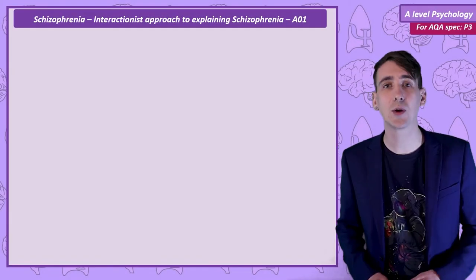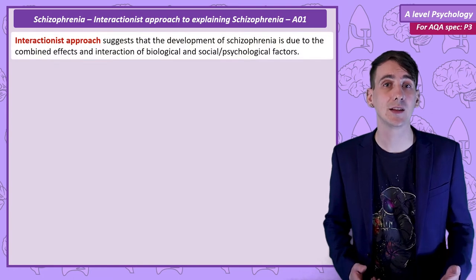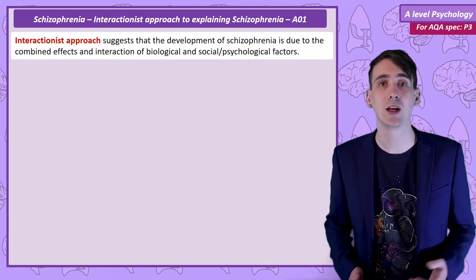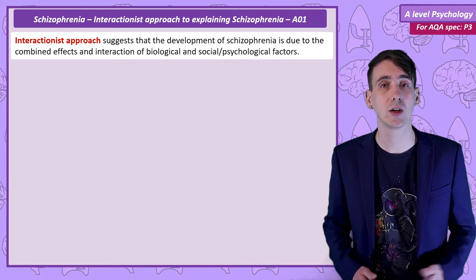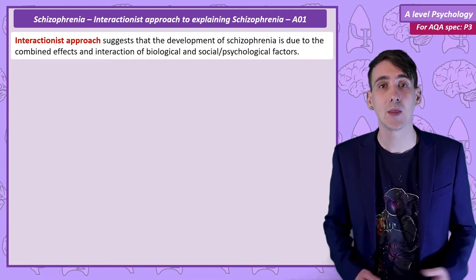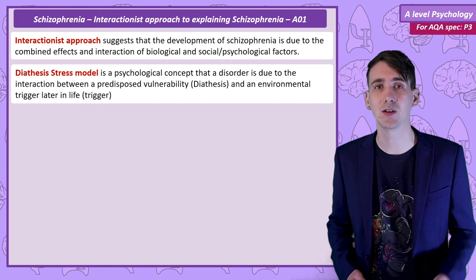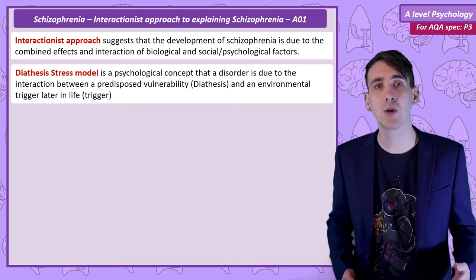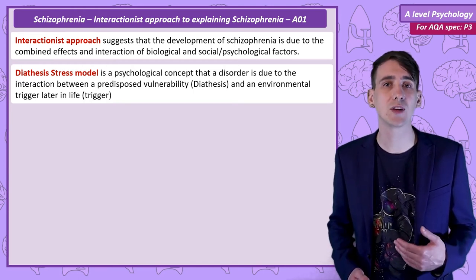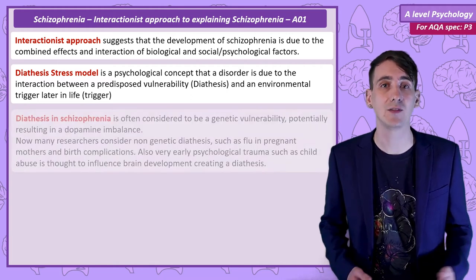To use an interactionist approach to explain schizophrenia is to consider how a combination of biological, psychological and social factors work to cause symptoms. The mechanism suggested by psychologists is the diathesis-stress model. In this model, people with schizophrenia are thought to have an internal vulnerability, known as a diathesis.